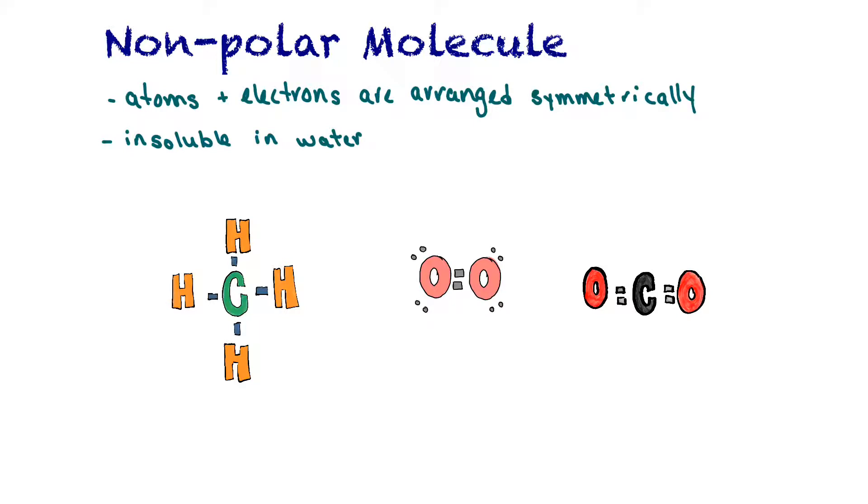A nonpolar molecule is a molecule where the atoms and electrons are arranged symmetrically in the molecule, and it makes the molecule insoluble in water. This one here is methane. We have a carbon atom with four hydrogen atoms bonded around it. It's completely symmetrical. There's no imbalance in arrangement of atoms around the carbon. The next example is oxygen. We have two oxygen atoms on either end, so they're exactly the same. We also have some lone pairs of electrons, but they're evenly spaced around the molecule. Our third example is carbon dioxide. We have a carbon in the middle and on either side is an oxygen atom, so it's symmetrically arranged as well. That makes it nonpolar.